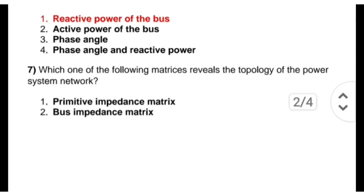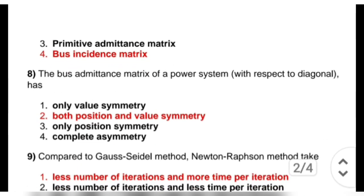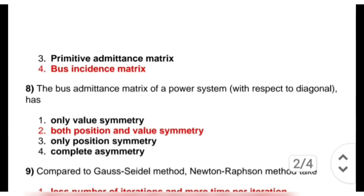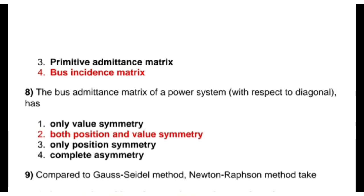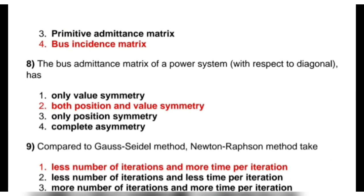Next question is: which one of the following matrices reveals the topology of the power system network? Options are primitive impedance matrix, bus impedance matrix, primitive admittance matrix, and bus incident matrix. The correct answer is bus incident matrix. Next question: the bus admittance matrix of a power system with respect to diagonal has — options are one value symmetry, both position and value symmetry, only position symmetry, or complete symmetry. The correct answer is both position and value symmetry.